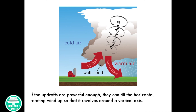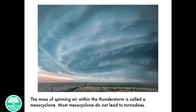If the updrafts are powerful enough, they can tilt the horizontal rotating wind up so that it revolves around a vertical axis. The mass of spinning air within the thunderstorm is called a mesocyclone. Most mesocyclones do not lead to tornadoes.